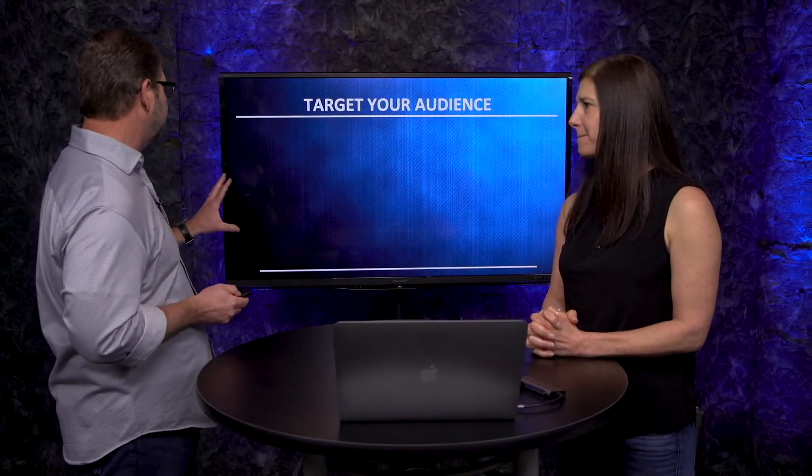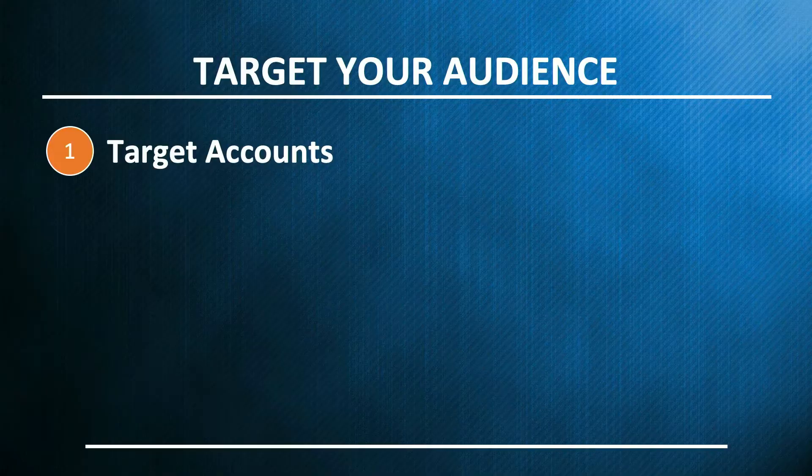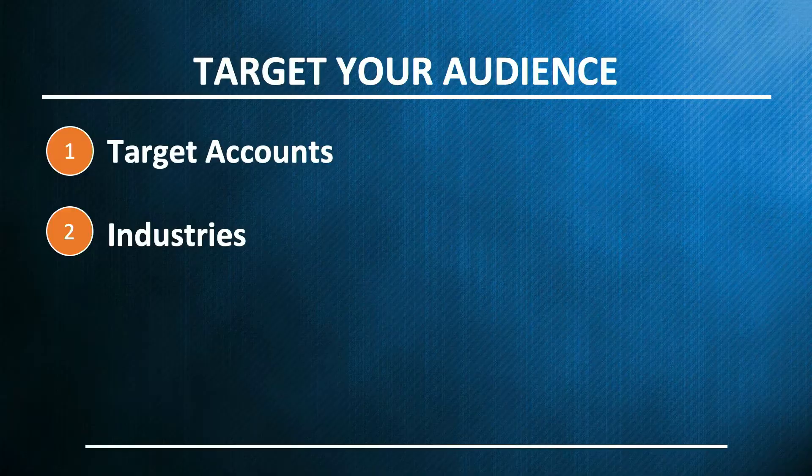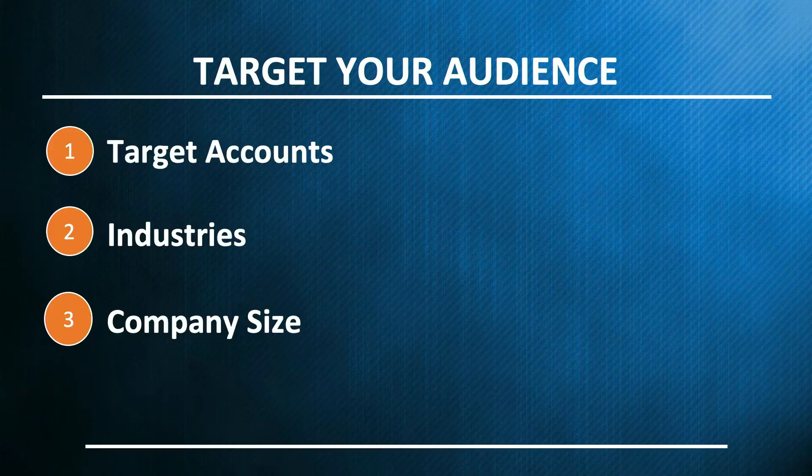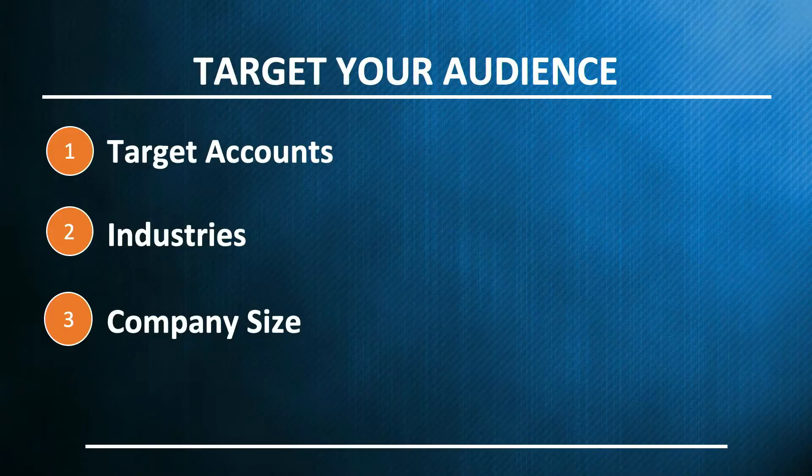Now let's talk about how we're going to target them. First, are there target accounts? In many B2B companies, especially when thinking about that niche, can you come up with a list of 400 or 1,000 actual company names you want to target? Next is industry — what industry can you serve the best? Then company size: at Vendi we work with B2B companies of about 50 to 300 employees — that's who we target. And finally, geographies — are you doing business all over the world, the United States, or just select markets? Think through those things and get them documented.